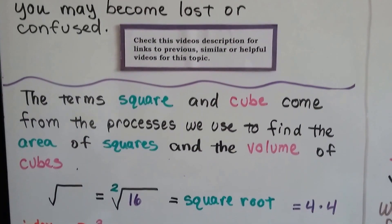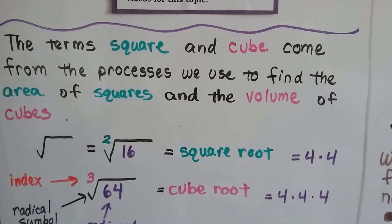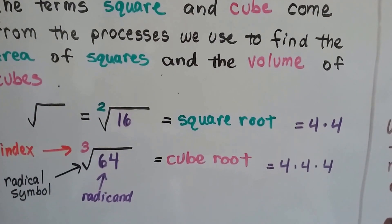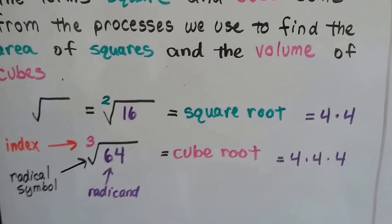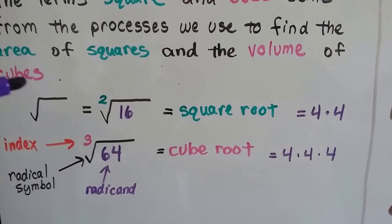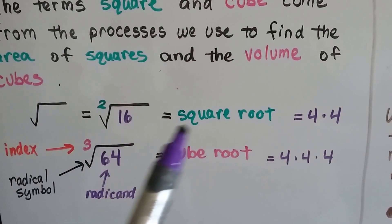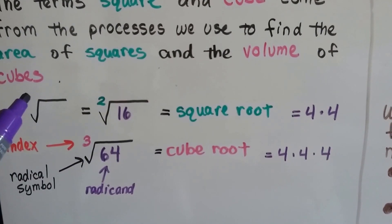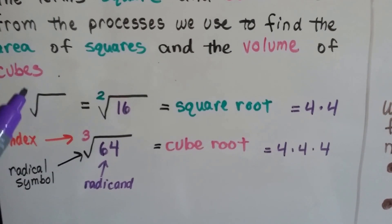The terms square and cube come from the processes we use to find the area of squares and the volume of cubes. So here we have a radical symbol, and if you notice there's a little 2 up here, this is the index. This would be the square root. There's actually a 2 here — when you see this symbol, there's a little invisible 2 there if there's no other number.